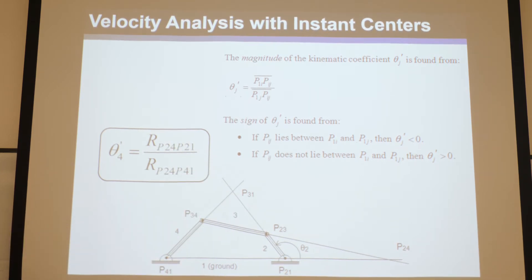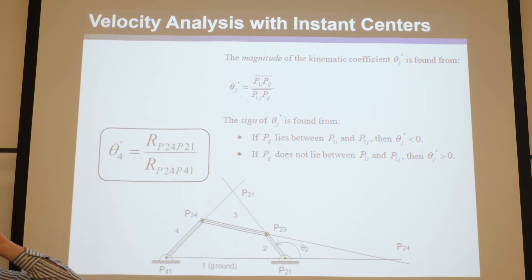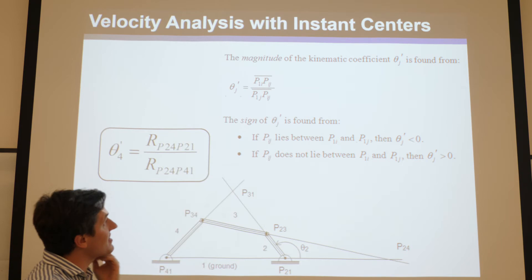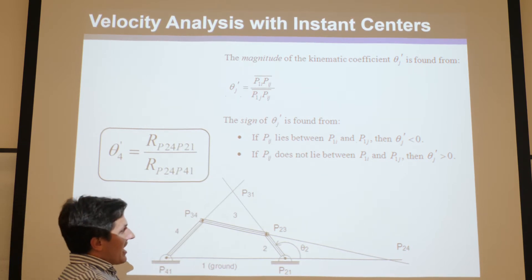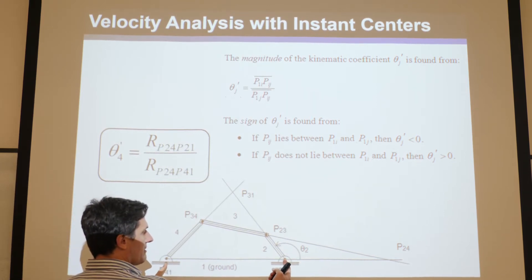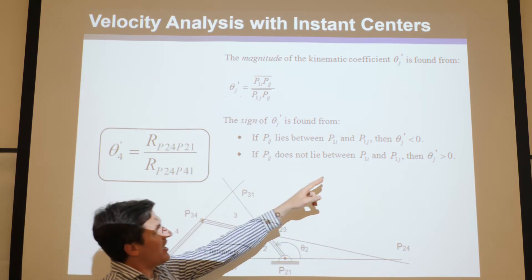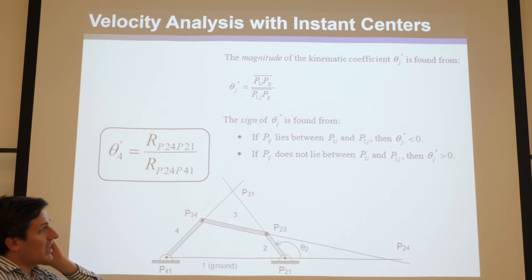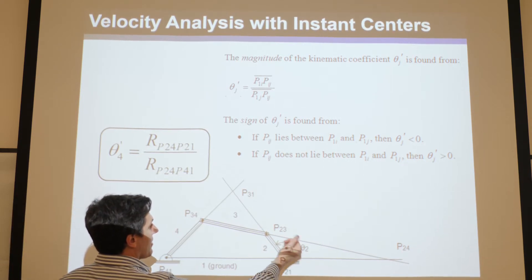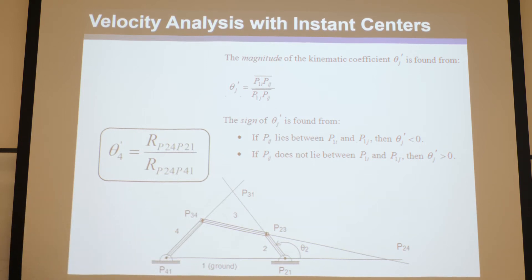If you memorize this convention, it tells you which two lengths to measure between pairs of instant centers. You find the ratio, then multiply by omega_2 to get omega_4 — velocity analysis done. This doesn't tell you the sign, but you can use the sign convention we've already discussed. If pij (p24) lies outside of p1i and p1j — that is, outside p21 and p41 — then the kinematic coefficient is negative.